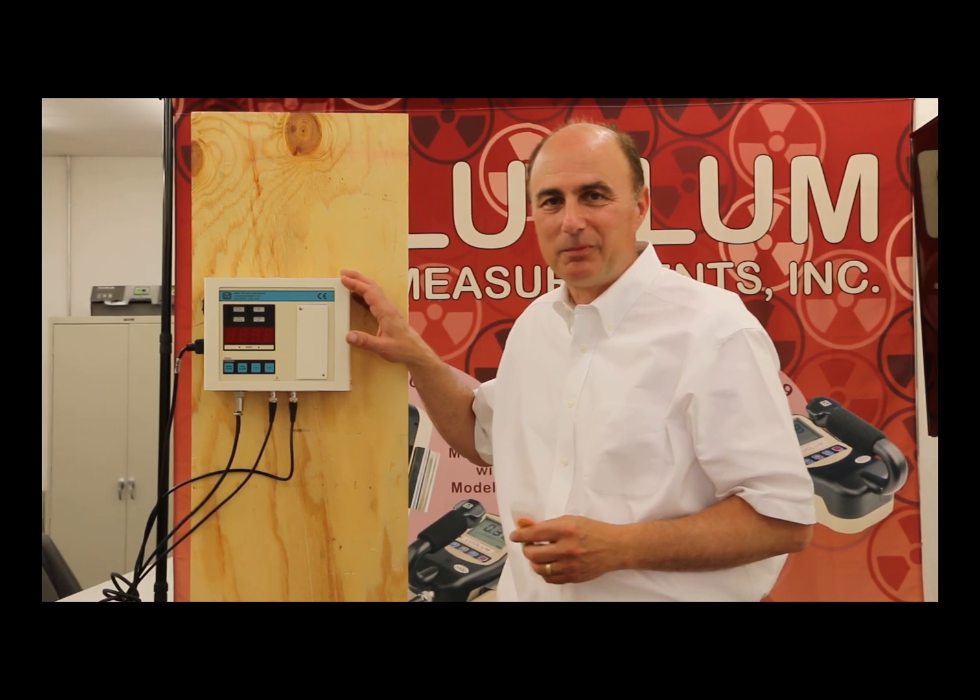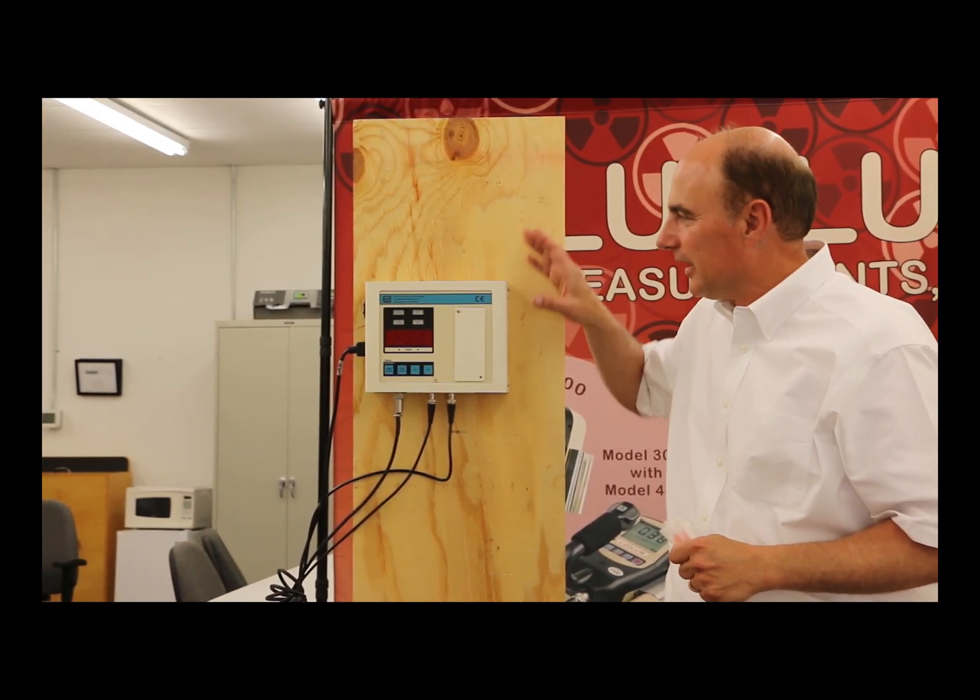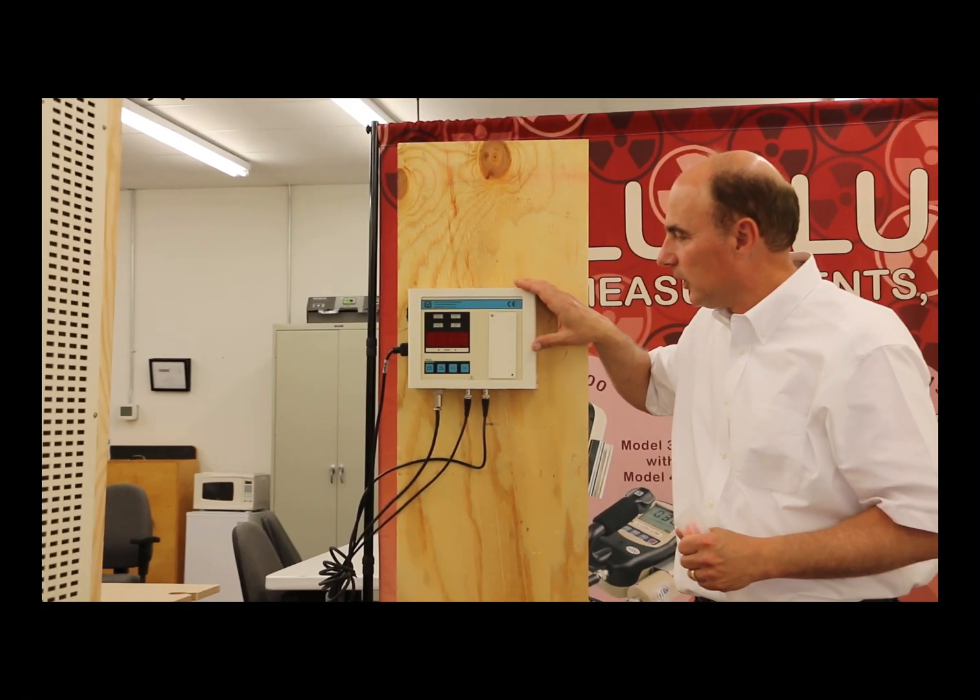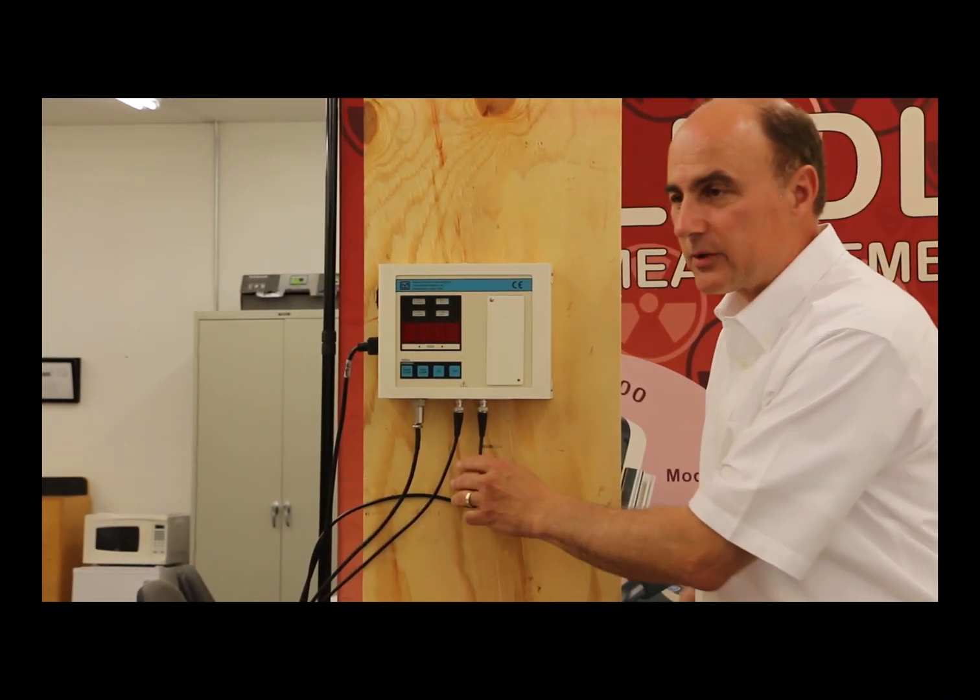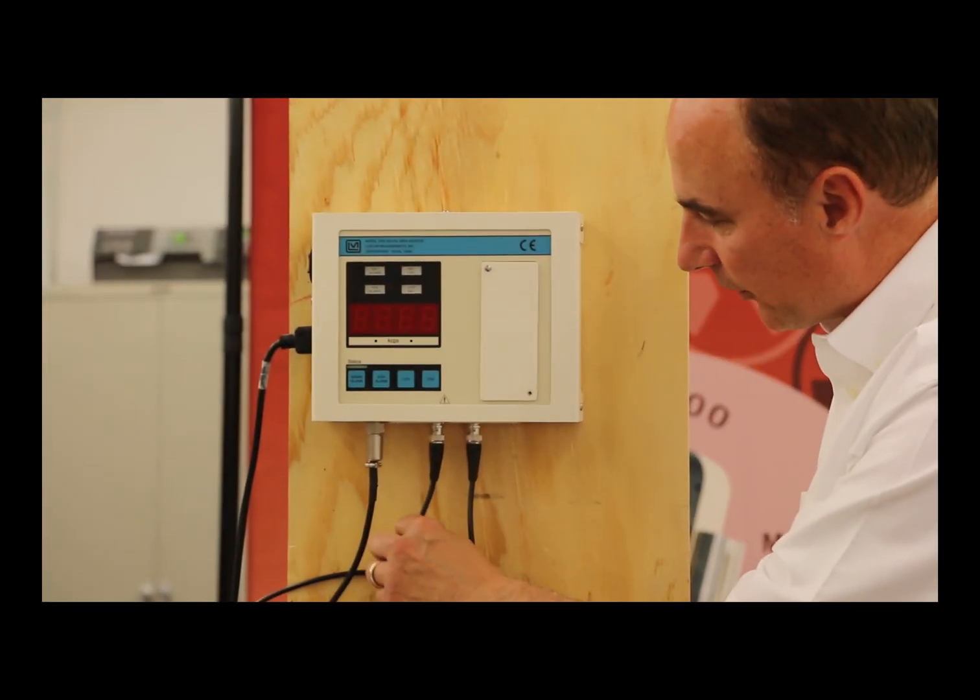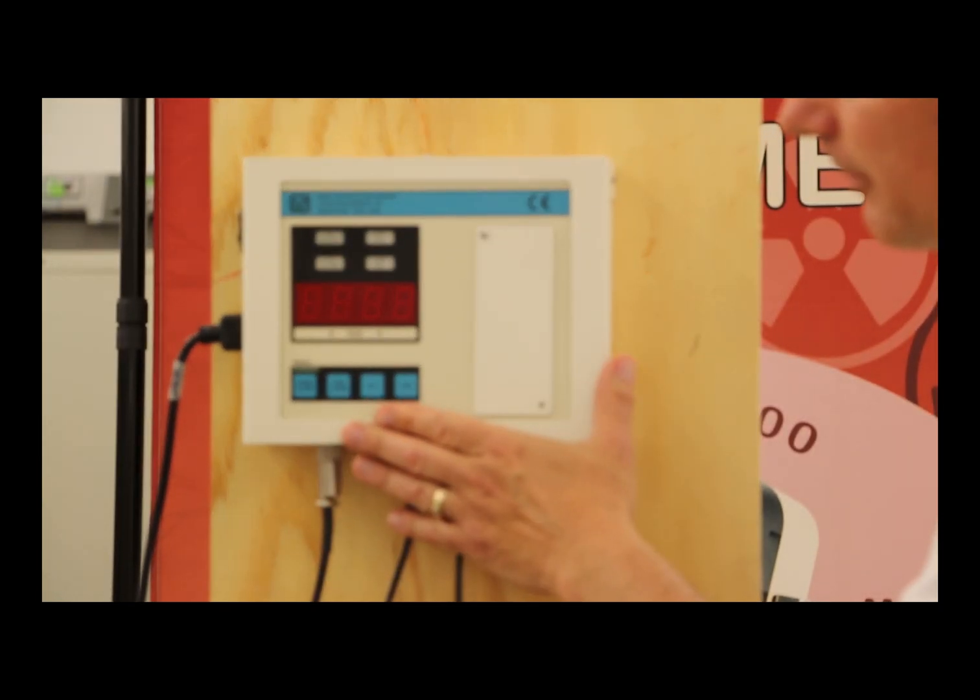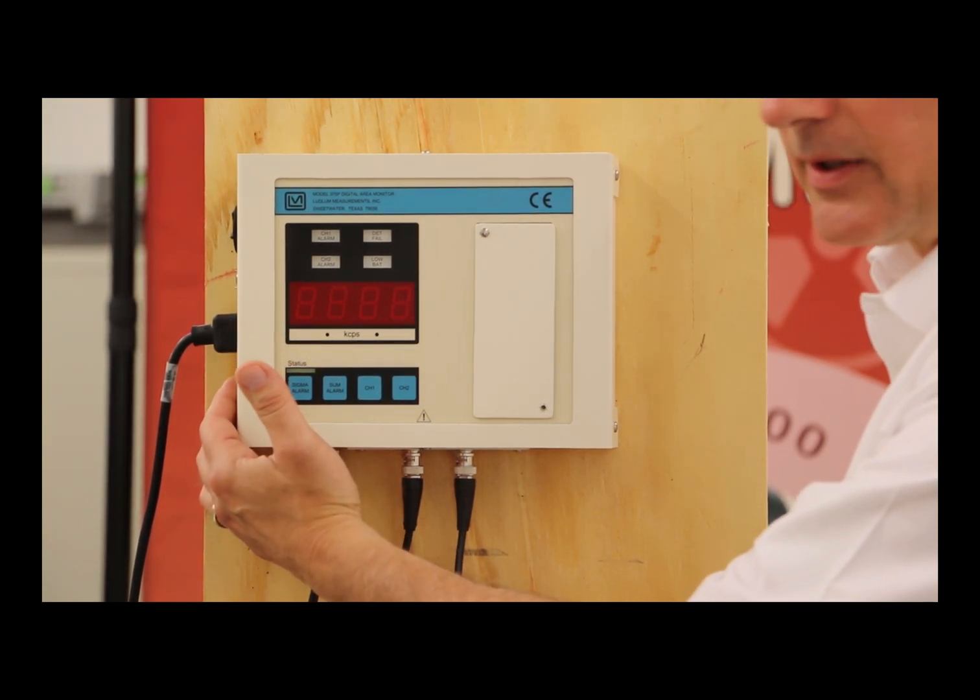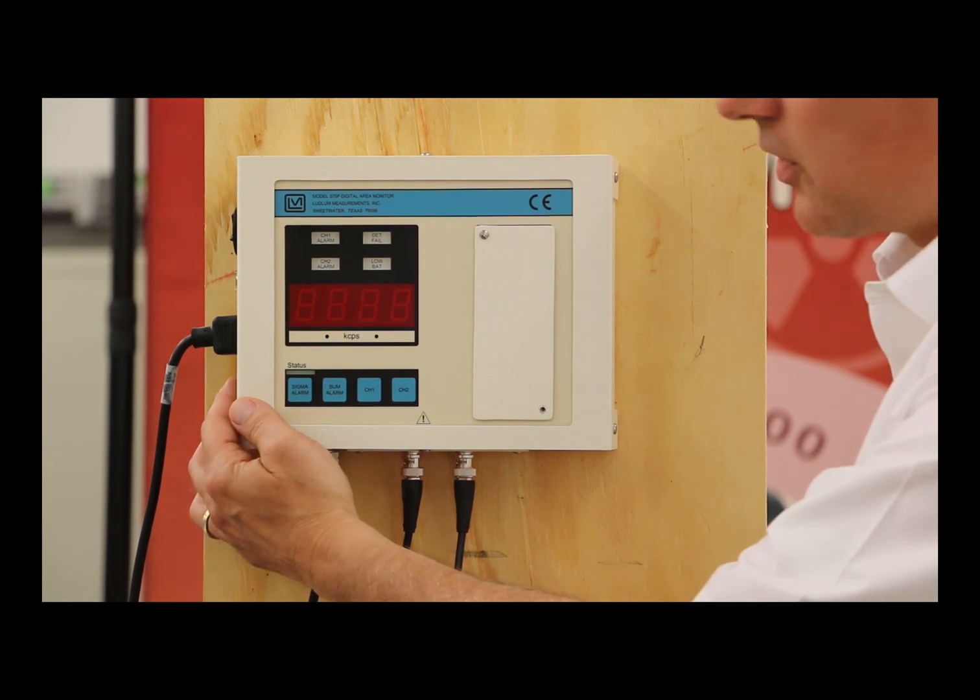Now let's jump into the operation of the Model 375P-336. As I mentioned before, it includes a 375 monitor, which will collect counts from two detectors, two scintillation detectors, which you can see the inputs here for channel one and channel two. It feeds them into the monitor where it sums the counts and how much radiation we're collecting. I'm going to switch this on.